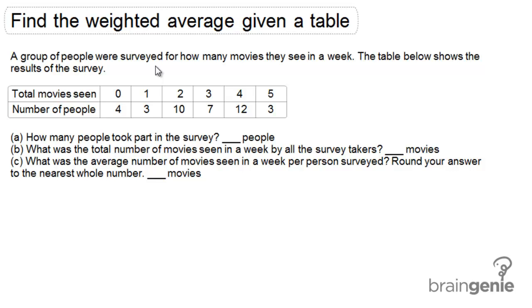So for part A, when it's asking how many total people took part in the survey, all we need to do is add up the number of people in this bottom row. I'm going to put plus signs in between the boxes to indicate that we're adding these up. So 4 plus 3 is 7, 7 plus 10 is 17, plus 7 is 24, plus 12 is 36, plus 3. For part B, 39 total people took part in this survey.